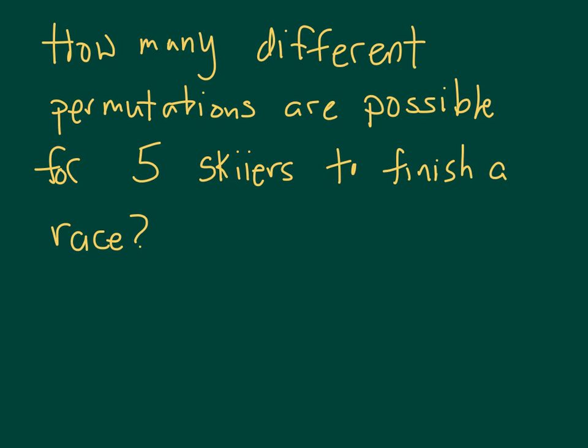Next question: how many different permutations are possible for five skiers to finish a race? Let's use the fundamental counting principle. There are five spaces that we need to fill. For first place coming in at the end of the race, there are five people that could fill it. The fundamental counting principle says for second place, we multiply the number of ways that second thing can happen. Well, the second thing can happen four ways because we already picked one. And then three, two, one.